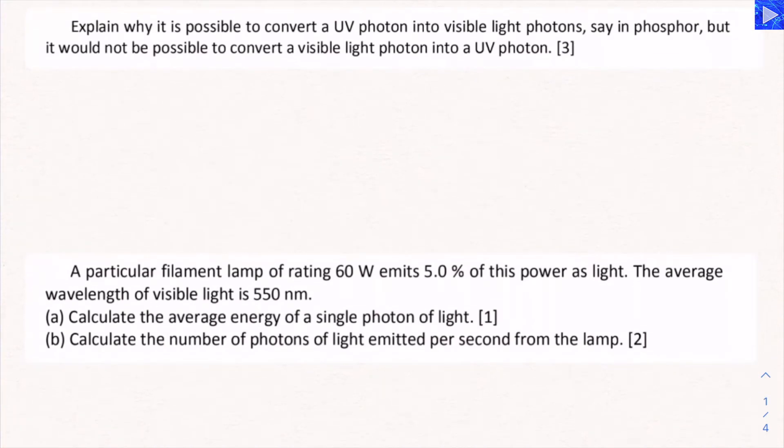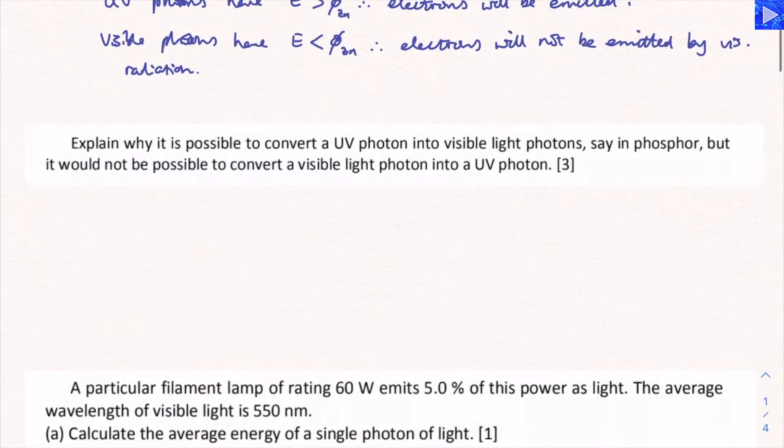Explain why it is possible to convert a single UV photon into visible light photons, say in phosphor, but it would not be possible to convert a visible light photon into a UV photon. This actually relates quite well to the previous question. We were considering the energies of UV and visible photons and comparing them to the work function.